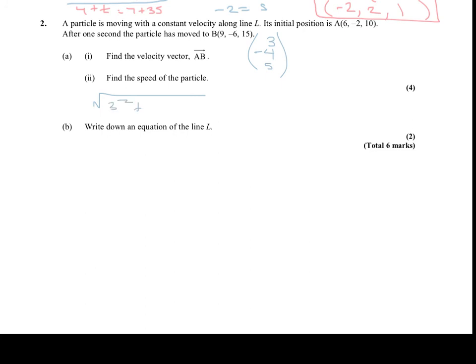3 squared plus negative 4 squared plus 5 squared. And so that's the square root of 9 plus 16 plus 25. And so that gives us the square root of 50. And we could leave it like that, or we could actually evaluate it and round to 3 sig figs. If we did that, it'd be 7.07. And then speed would be distance per second. Now it doesn't actually tell us if it's meters or miles, so we'll just say units per second. And that's our speed.